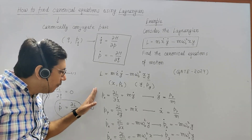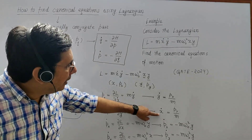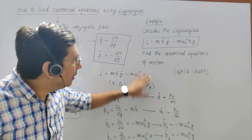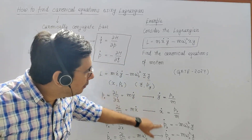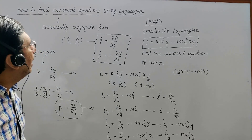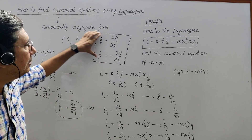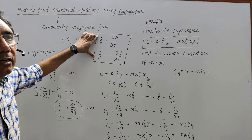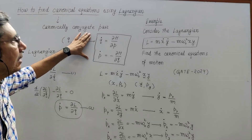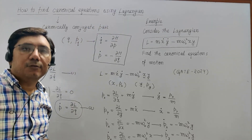In this way, using the Lagrangian directly, we found all four canonical equations: ẏ = px/m, ẋ = py/m, ṗx = -mω₀²y, and ṗy = -mω₀²x. So not only with the Hamiltonian, but by carefully observing the problem, one can also use the Lagrangian to find canonical equations.